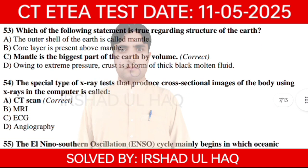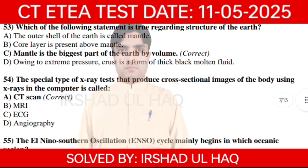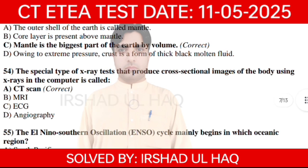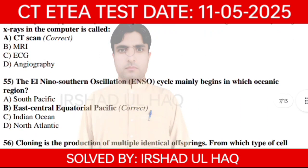Question number 21. The special type of X-ray test that produces cross-sectional images of the body using X-rays and a computer is called CT scan. K and HGA is the correct option.